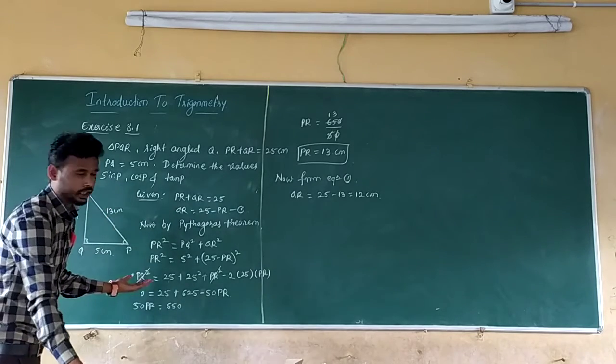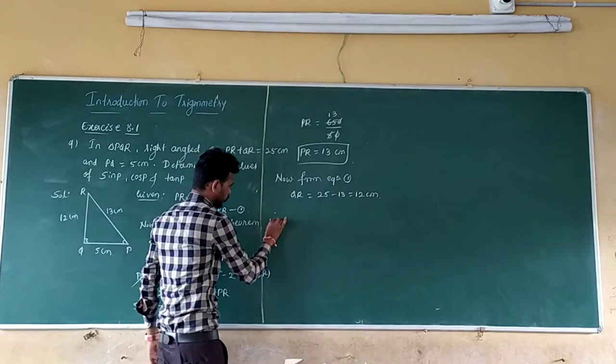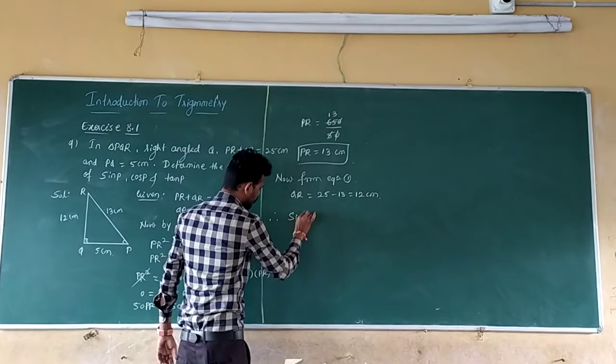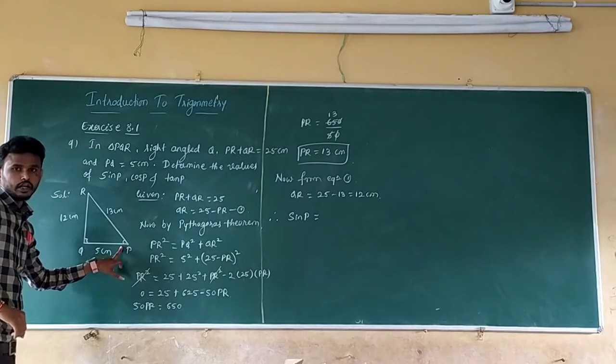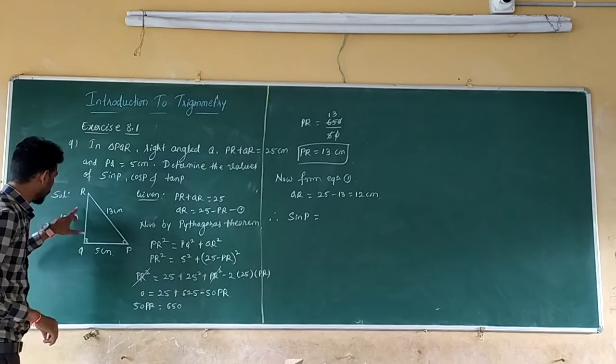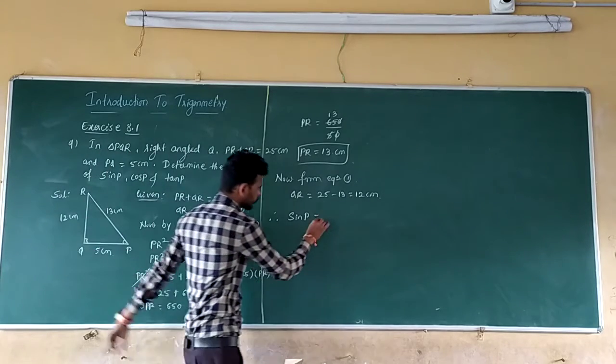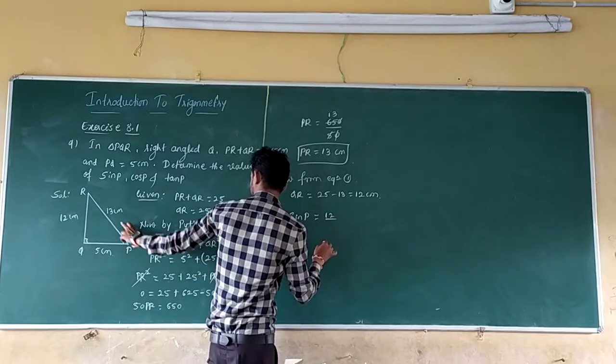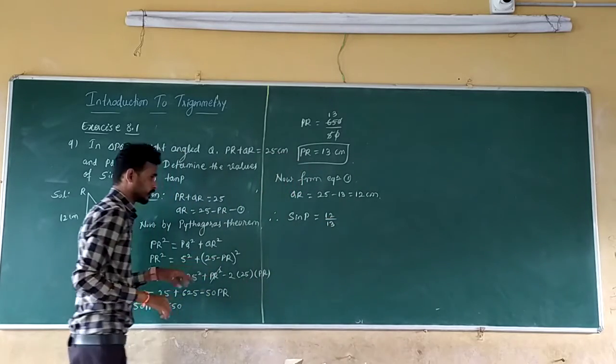Therefore you can write the trigonometric ratio. Therefore, first one: sine P which is equal to opposite over hypotenuse. Opposite is QR means 12 divided by hypotenuse is 13.